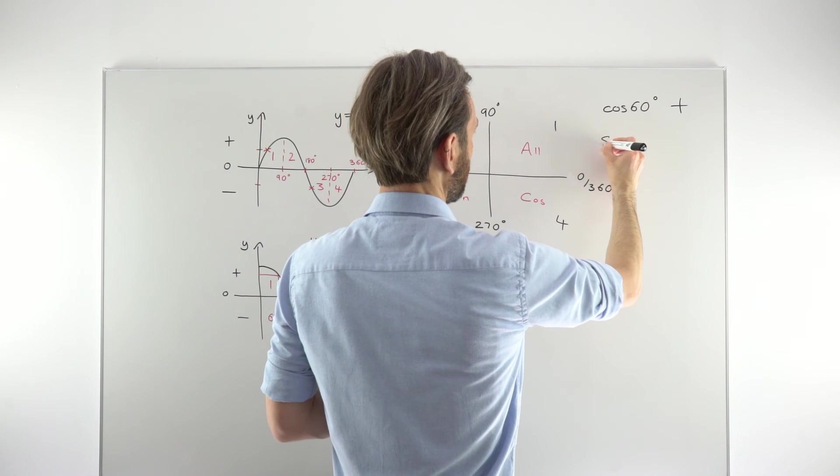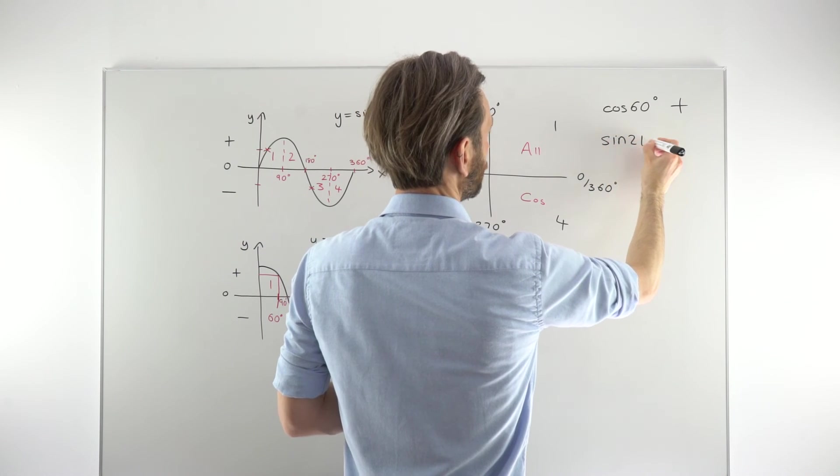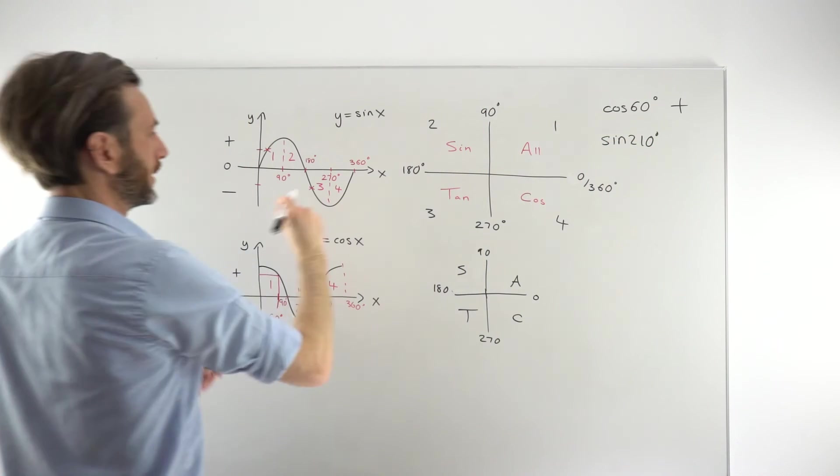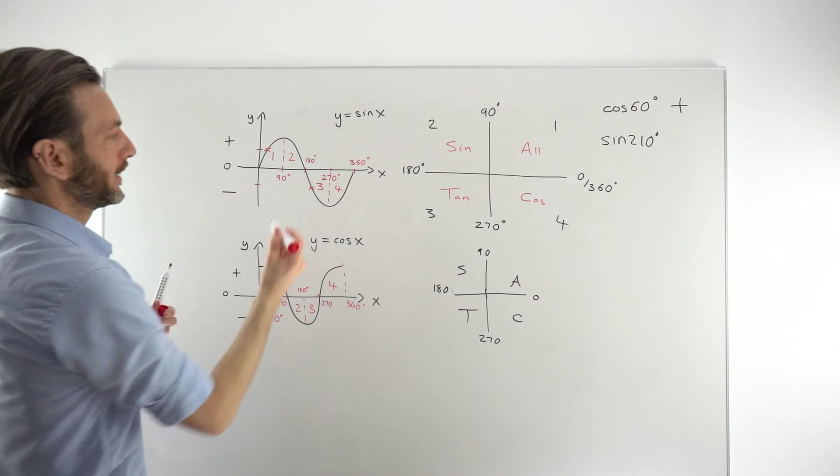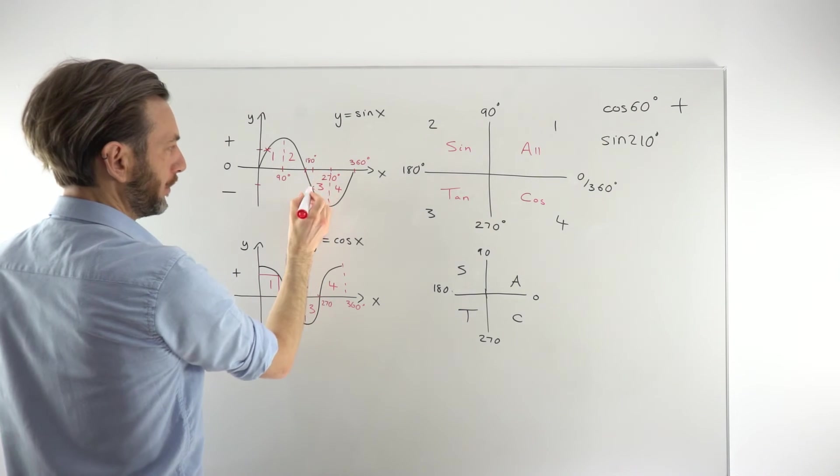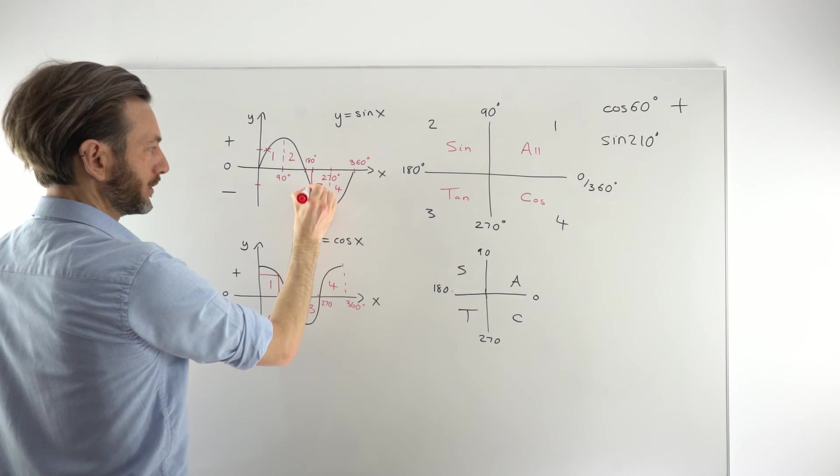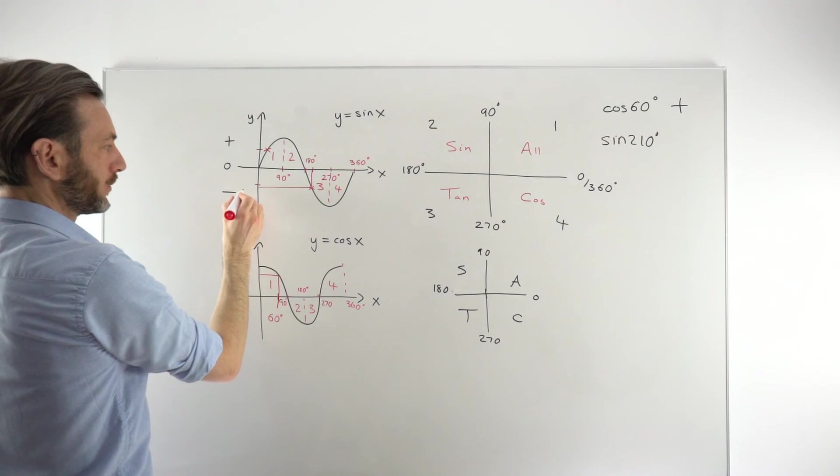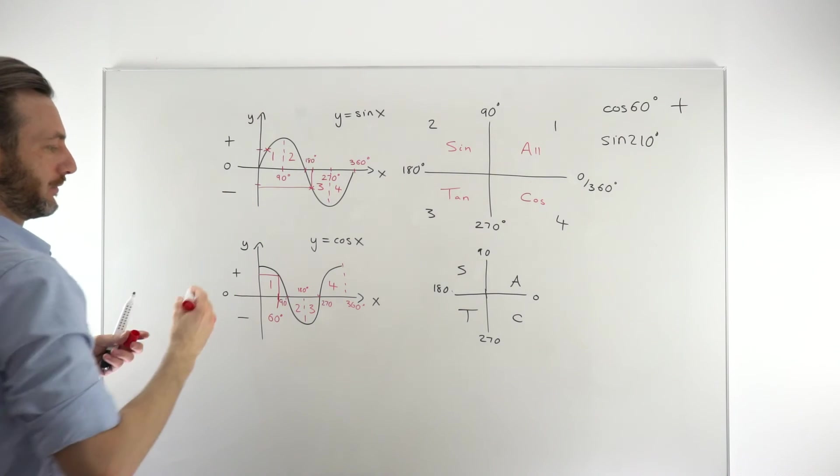If we wanted to do another one, let's say the sine of, say, 210 degrees. So let's look at our sine graph. So 210, just a little beyond 180. So that's actually quite close to that point I marked on earlier. So let's say that we go down to that point and then along. So that's clearly going to be some negative value.